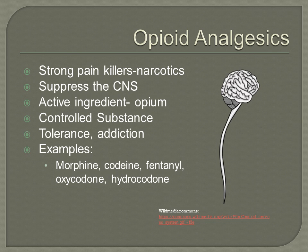Morphine, codeine, and fentanyl are commonly used opioids and are Schedule II, which means there is a high potential for addiction. Tolerance can also happen with long-term use. According to the Controlled Substance Schedule, heroin is an opioid classified as Schedule I, which means it has the highest potential for addiction and has no medically accepted use in the United States.